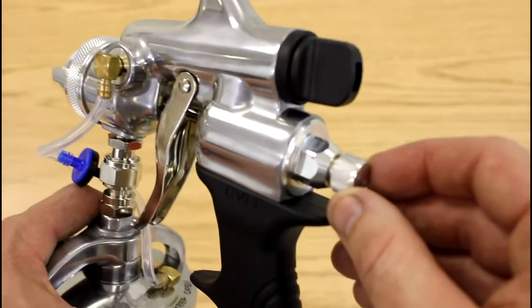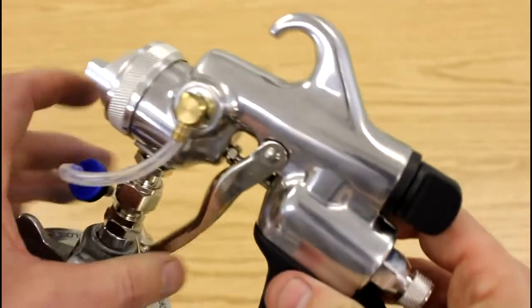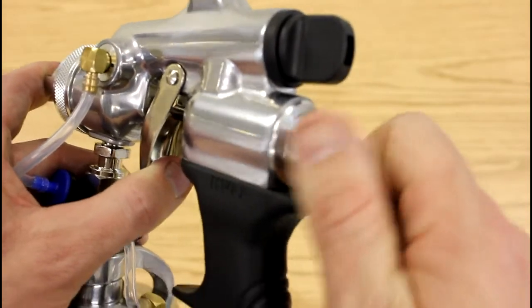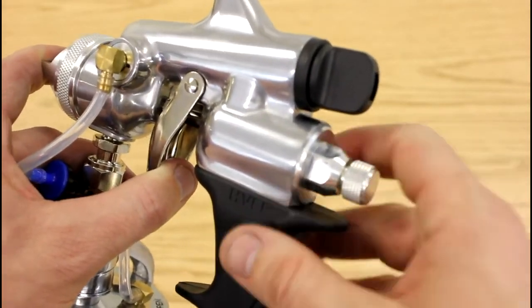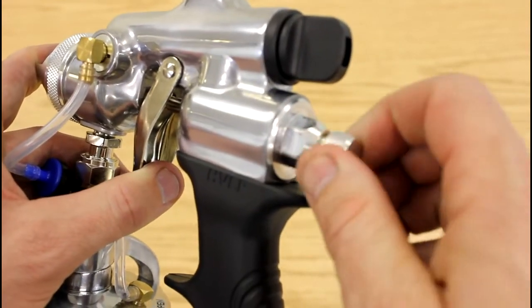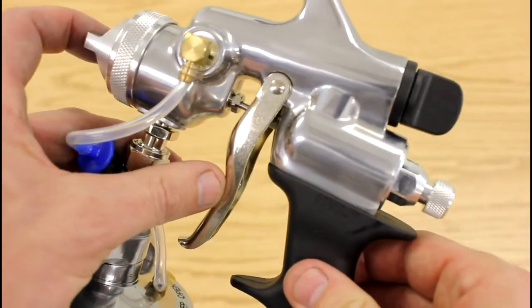And then below that is the material control knob. This is what controls how much material is let out of the gun so by turning this all the way in clockwise we'll shut off all material coming out of the gun and then as we slowly open it more and more material will be allowed out of the front of the gun.